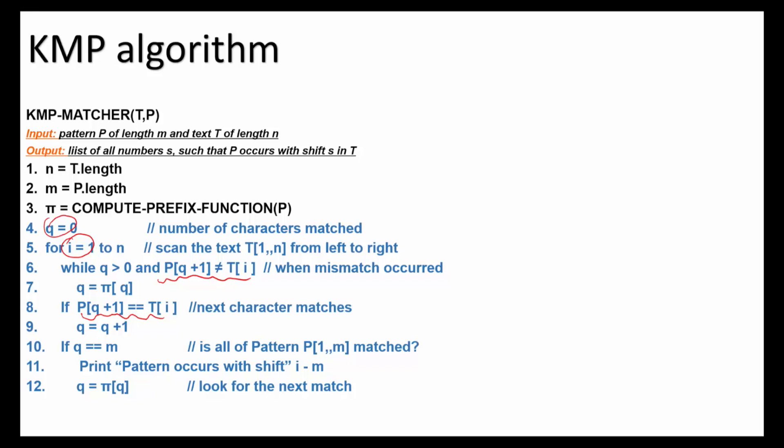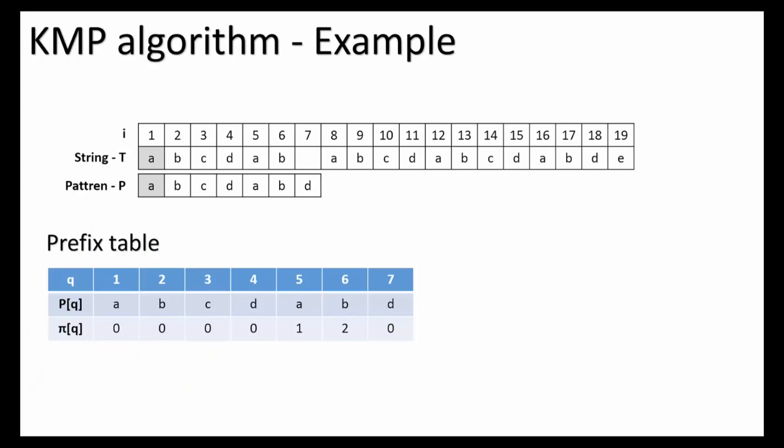By the way, the i will remain the same. In other words, if a mismatch is detected, the number of times you shift the pattern to the right is equal to q, which is the number of the characters that have been matched successfully, minus pi[q]. i does not change. This shows that the algorithm does not backtrack. This will be demonstrated clearly in the example I'm going to show you now.